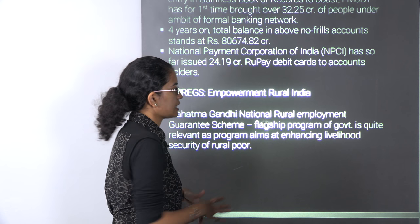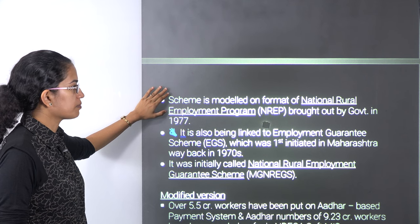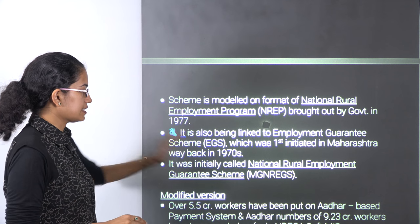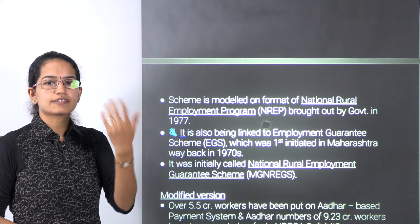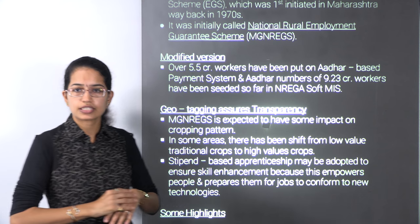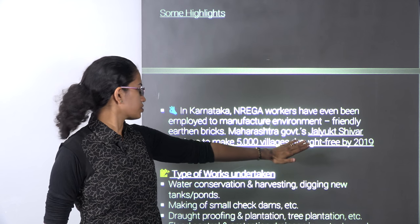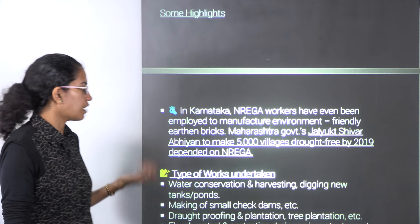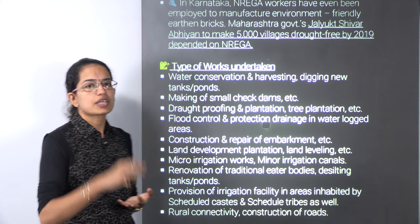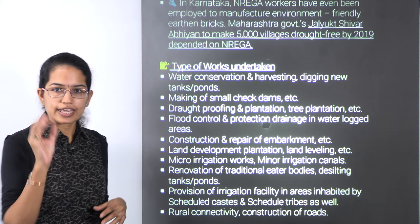The MGNREGA — Mahatma Gandhi National Rural Employment Guarantee Scheme — talks about 100 days of minimum employment opportunity. It originated from the National Rural Employment Program started in 1977, was linked to the Employment Guarantee Scheme from the 1970s, initially called the National Rural Employment Guarantee Scheme, and later renamed MGNREGA. Under this, various small projects including geotagging of infrastructural projects like watersheds, Johads, and small dams were part of it to bring in more transparency. The Jalyukt Shivar Abhiyan aims to make nearly 5,000 villages drought-free. Works included under MGNREGA are: development of Johads and watersheds, rainwater harvesting, small check dams, water conservation, flood control, land development, road development, geotagging of resources, and provision of agriculture and irrigation facilities.